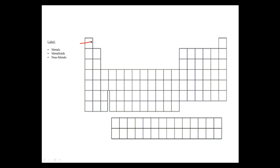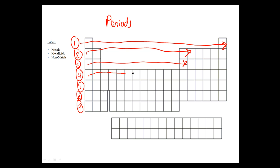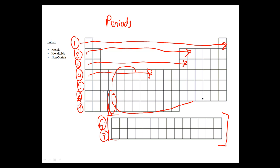The inner transition elements go right in the gap, so technically they would be part of period 6 and part of period 7. The only reason why they're not in there is for logistical reasons — the paper is just not wide enough. So if you had to imagine bringing this whole section and shifting it in, just to fit the inner transition elements in there, it would be really weird to print out.